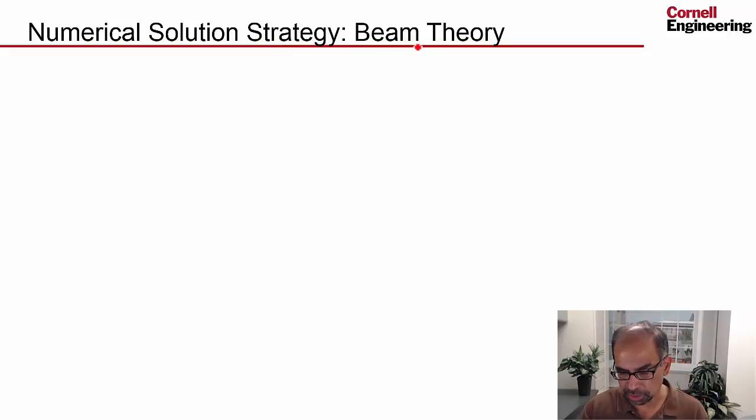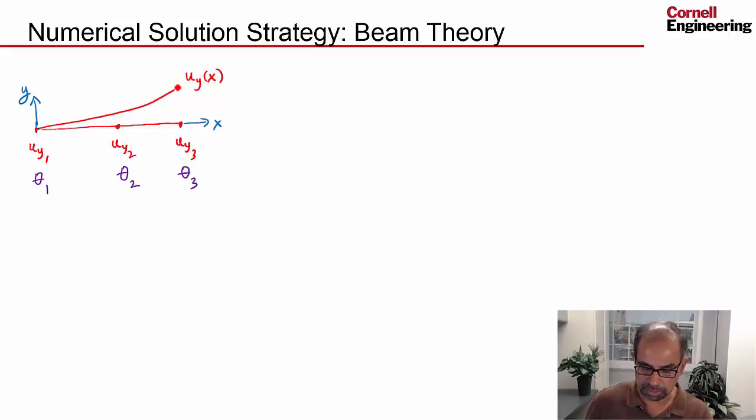First, let's review the numerical solution strategy for beam theory, which is considered in the cantilever beam module. So essentially, we need to find the deformed shape of the midline here, that is this function u_z(x), such that the potential energy of the beam is minimized. And we say, you know what, it's too hard to find an unknown function. So instead, we will find values at selected points, in this case three points, three nodes.